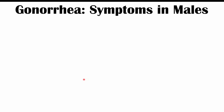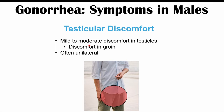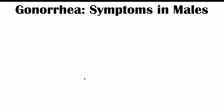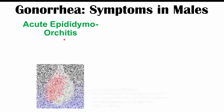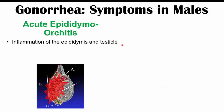Other important symptoms include testicular discomfort, which is often mild to moderate in severity and typically unilateral, so one side of the scrotum is more painful than the other. An important complication of gonorrhea infection in males is acute epididymal orchitis — inflammation of the epididymis and testicle. The epididymis is at the back of the testicle where sperm is stored, and this occurs unilaterally.